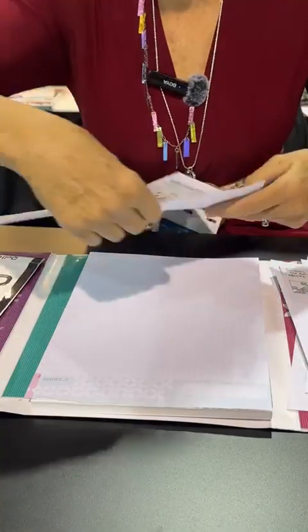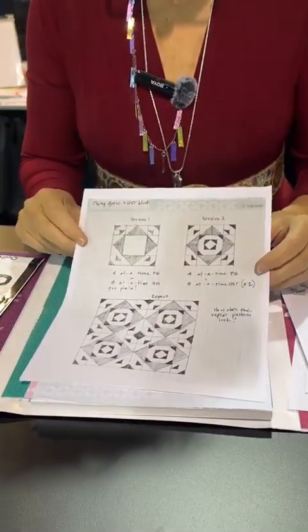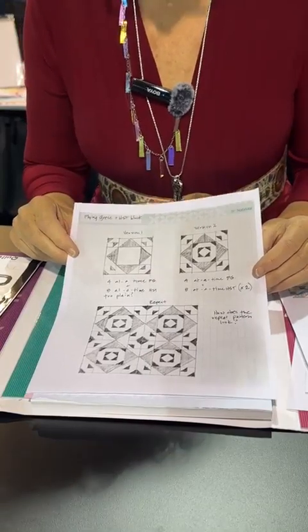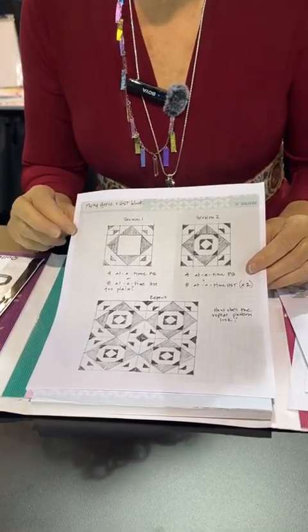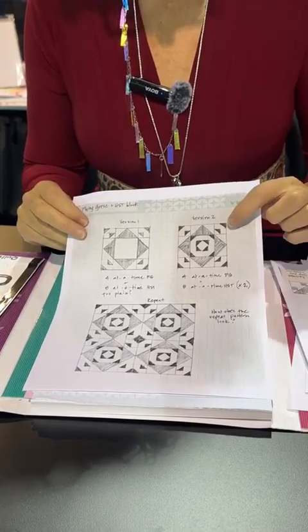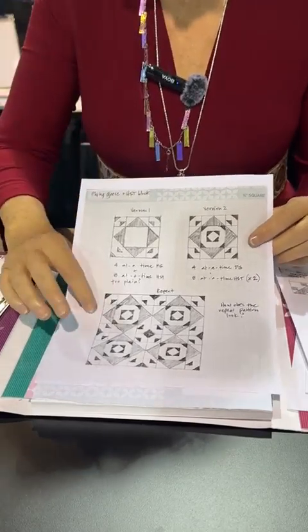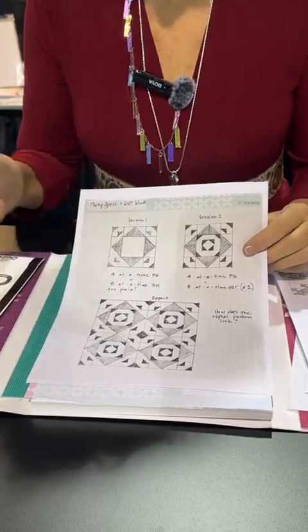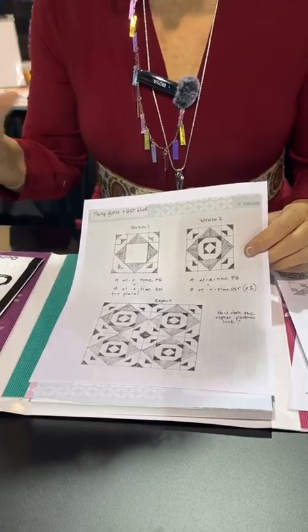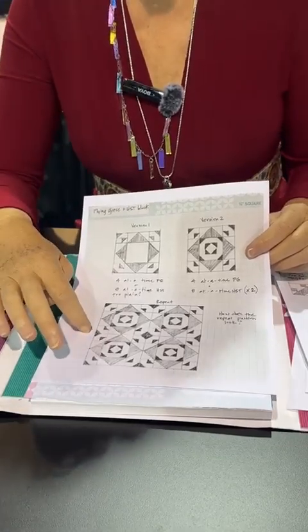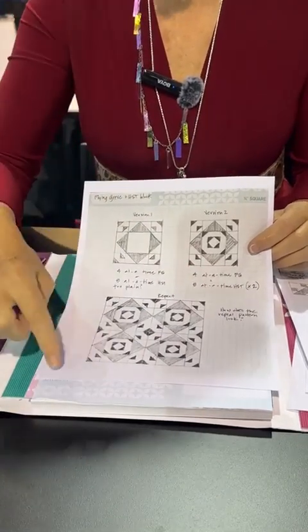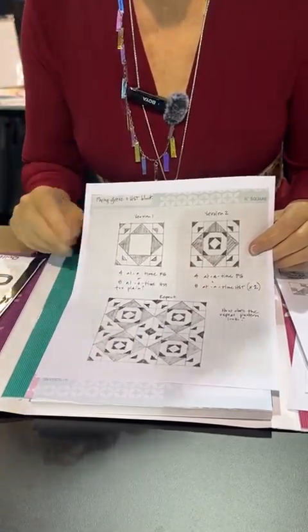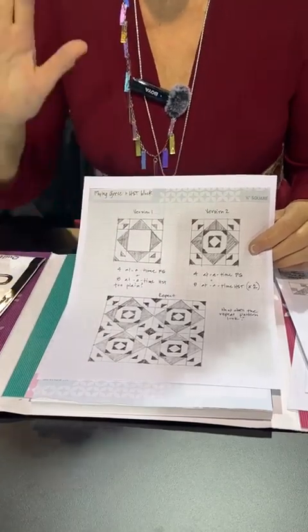And then the last one I want to show you is I said to her, okay, design me a block and then show me how you would use it. So this was her first version. And then she was like, oh, I need something a little more interesting. So then she did this one and then here's the repeat. And so if you think about if you're going to do a four block, this is a four block quilt, you could add sashing, you could add some more half square triangles around it, or you could make it bigger and you'll get a different pattern.